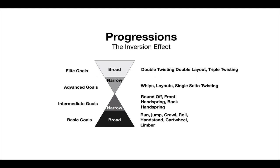So you have this broad base of movements at the basic goals: run, jump, crawl, roll, handstand, cartwheel, limber. In the intermediate goals, it starts to narrow: round off, front handspring, back handspring.